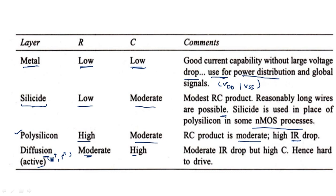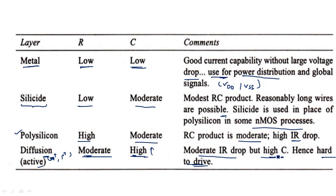Active diffusion — N-plus or P-plus diffusion — has moderate resistance but high capacitance. High capacitance means we should not use it beyond the limit. There is moderate IR drop but high capacitance, making it very hard to drive. That is why diffusion is not preferred beyond transistor creation. This is the choice of layers and where to use which layer.